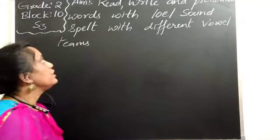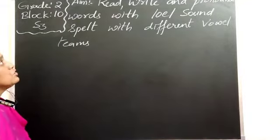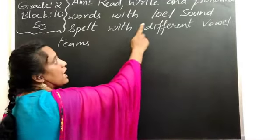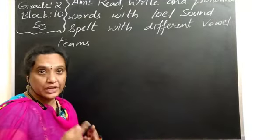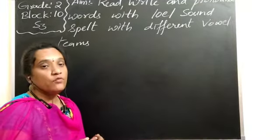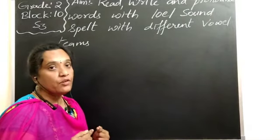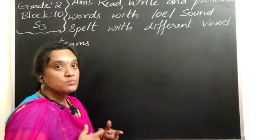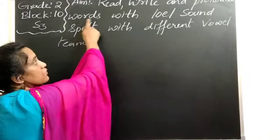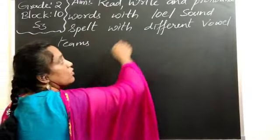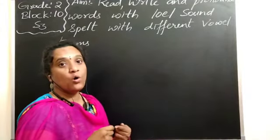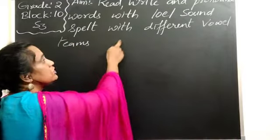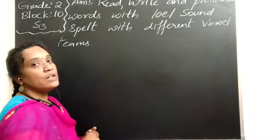Before that, let us see what we are going to read. So we are going to read, write, and pronounce. We are supposed to read them, write them, and pronounce them — the words with the O sound, O-E that use the O sound, spelt with different vowel teams.